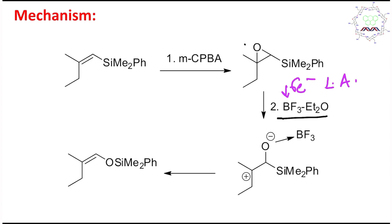So the next step is epoxide opening with a Lewis acid. Why? Because this oxygen has lone pairs of electrons, and oxygen and boron belong to the same row — second row elements — so their orbital overlap is better. So what will happen? BF3 will coordinate to this oxygen. Consequently, boron will have a formal negative charge and the oxygen atom will have a formal positive charge. Now, positive charge on oxygen is not very stable; electron deficiency on oxygen is not desired because oxygen is a highly electronegative atom, so it prefers to keep electron density on itself and does not like a positive charge.